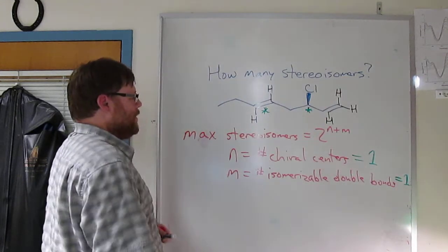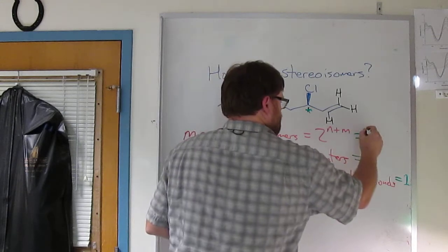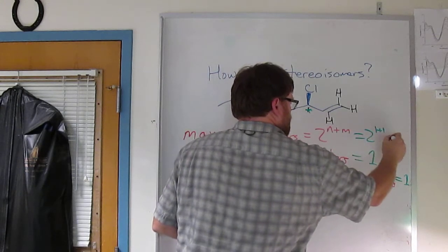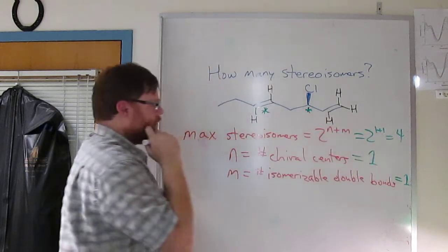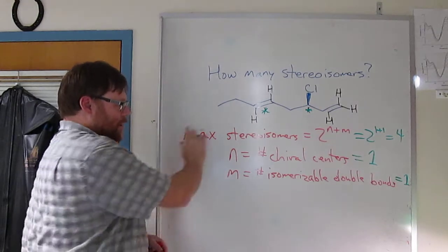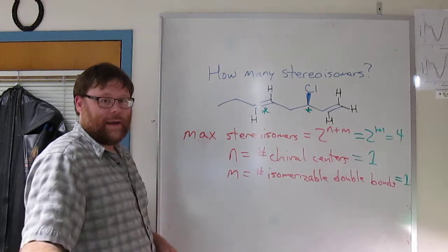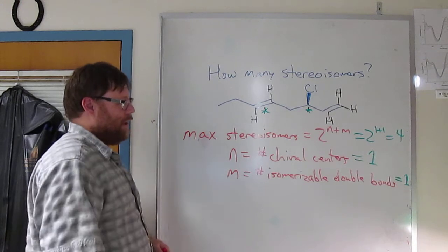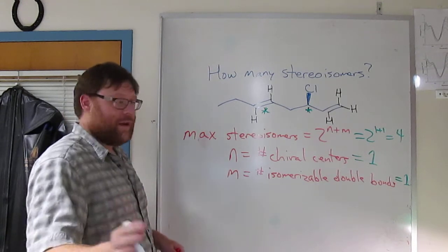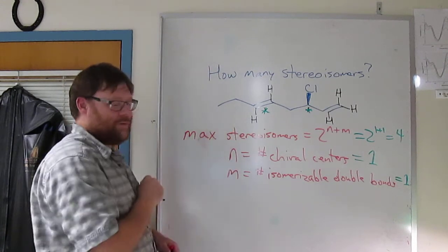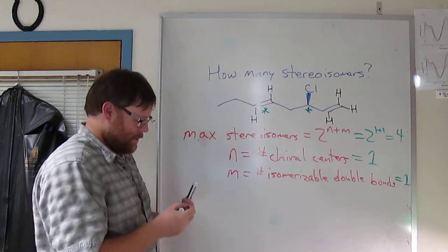And so again, the number of stereoisomers then is two to the one plus one is four, right? Two to the two is four. Okay, I'm going to erase the words here and ask you to go away and draw the other three stereoisomers. There's only three other ones, right? I've drawn one of the four stereoisomers here. There should be three others. Go ahead and draw them.